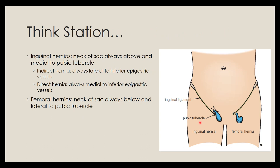Key takeaway: in inguinal hernias, the neck of the sac is always above and medial to the pubic tubercle. To differentiate direct from indirect, determine whether the hernia appears lateral or medial to the inferior epigastric vessels — lateral means indirect, medial means direct. For femoral hernias, the neck of the sac is always below and lateral to the pubic tubercle, in the region of the femoral canal.